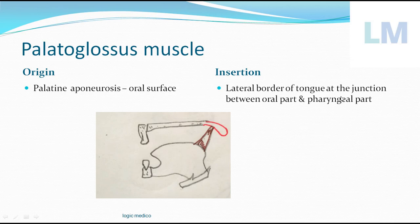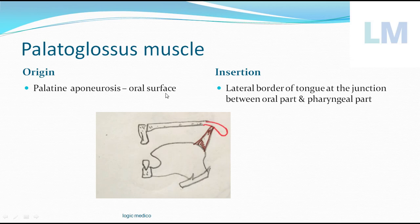As the name suggests, origin is palate and insertion is tongue. The origin is from the palatine aponeurosis — specifically the oral surface — because the muscle has to go to the tongue, which is in the oral cavity. If it were palatopharyngeus, it would be the pharyngeal surface. But this is palatoglossus, so it must be the oral surface.